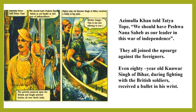Azimullah Khan told Tatya Tope to make Nana Sahib the leader of that war of independence. They all joined together against the foreigners. All over North India, the people fought big battles against the British.